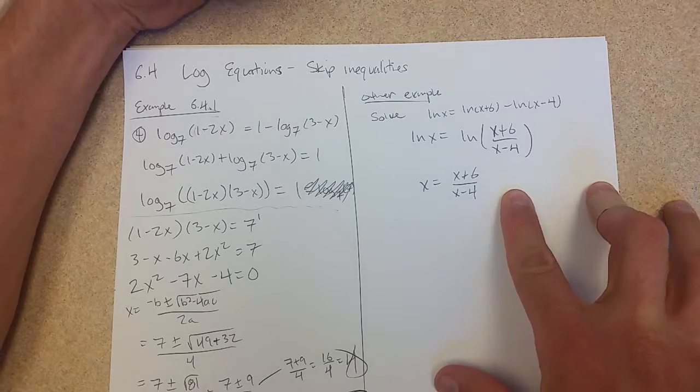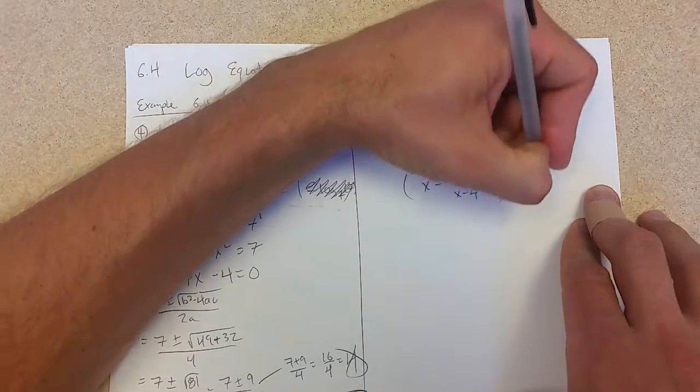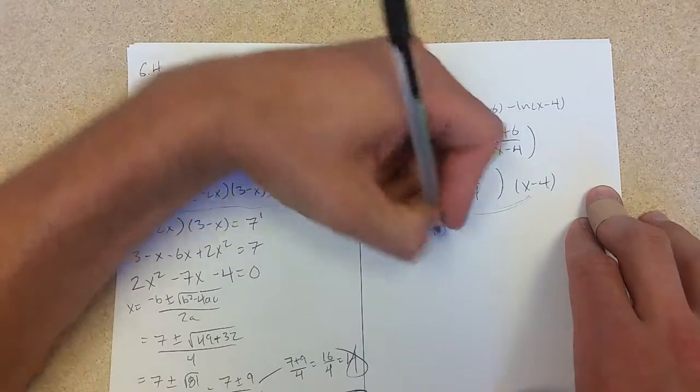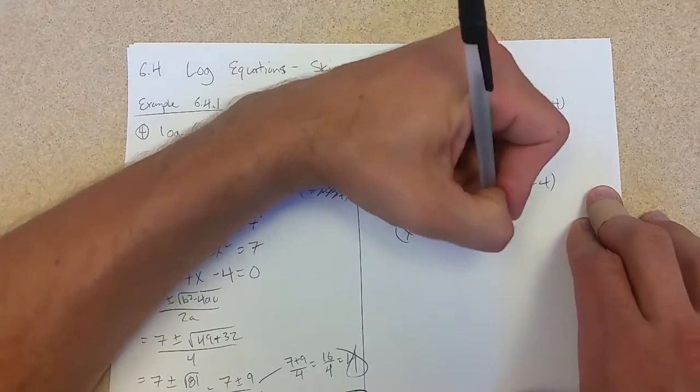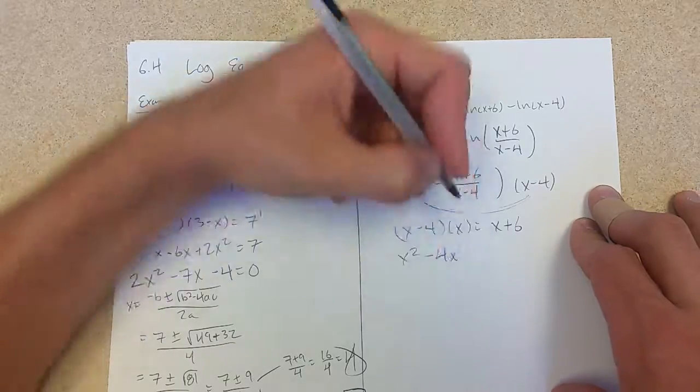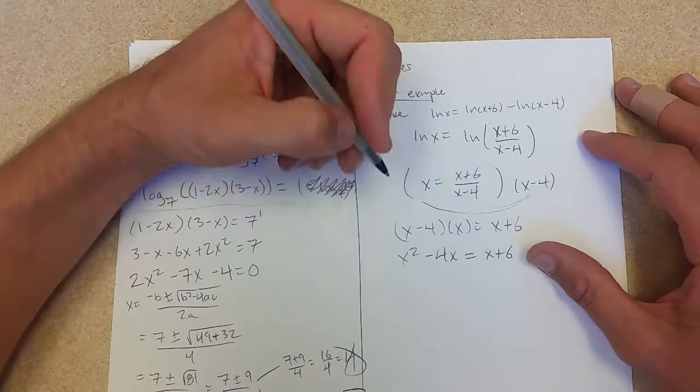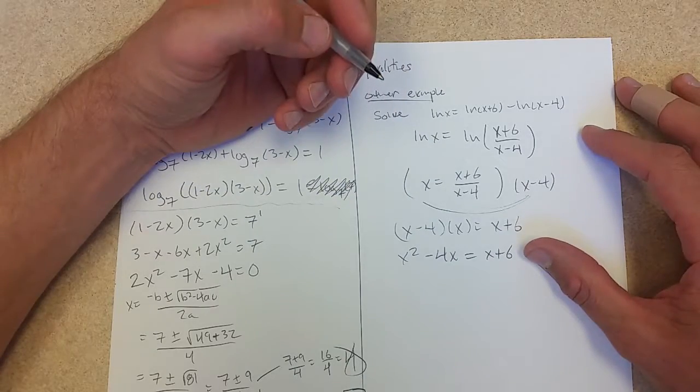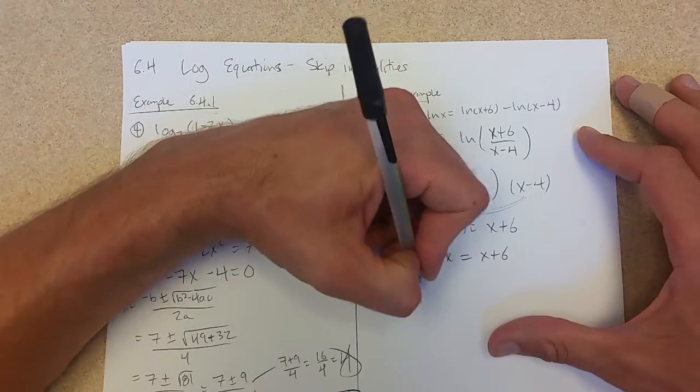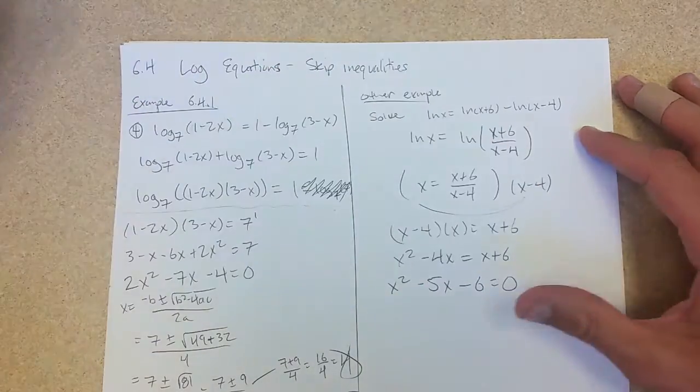Don't like fractions, let's multiply by the denominator. So multiply everything by x minus 4 on both sides. Distribute. x squared minus 4x equals x plus 6. We're going to subtract x plus 6. x squared minus 4x minus x is minus 5x, minus 6 equals 0.